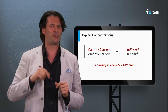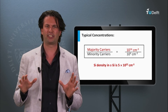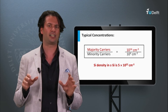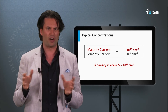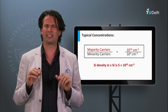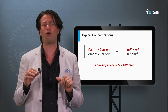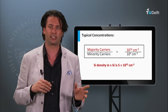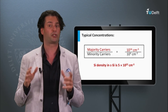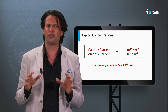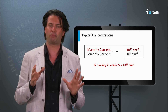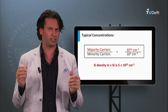Let's get a feeling for the typical concentrations for majority and minority charge carriers in doped silicon networks in the dark. Typical densities for majority charge carriers in silicon are 10 to the 16th per cubic centimetre, whereas the density of minority charge carriers in that case would be 10 to the 4th per cubic centimetre. This shows that the density of majority charge carriers can be many orders of magnitude higher than of the minority charge carrier. Note that the silicon density in crystalline silicon is 5 times 10 to the power 22 per cubic centimetre, meaning the total number of charge carriers is much lower than the typical density of silicon atoms. The ratio of majority charge carriers to silicon atoms in this example is 1 to 5 million.